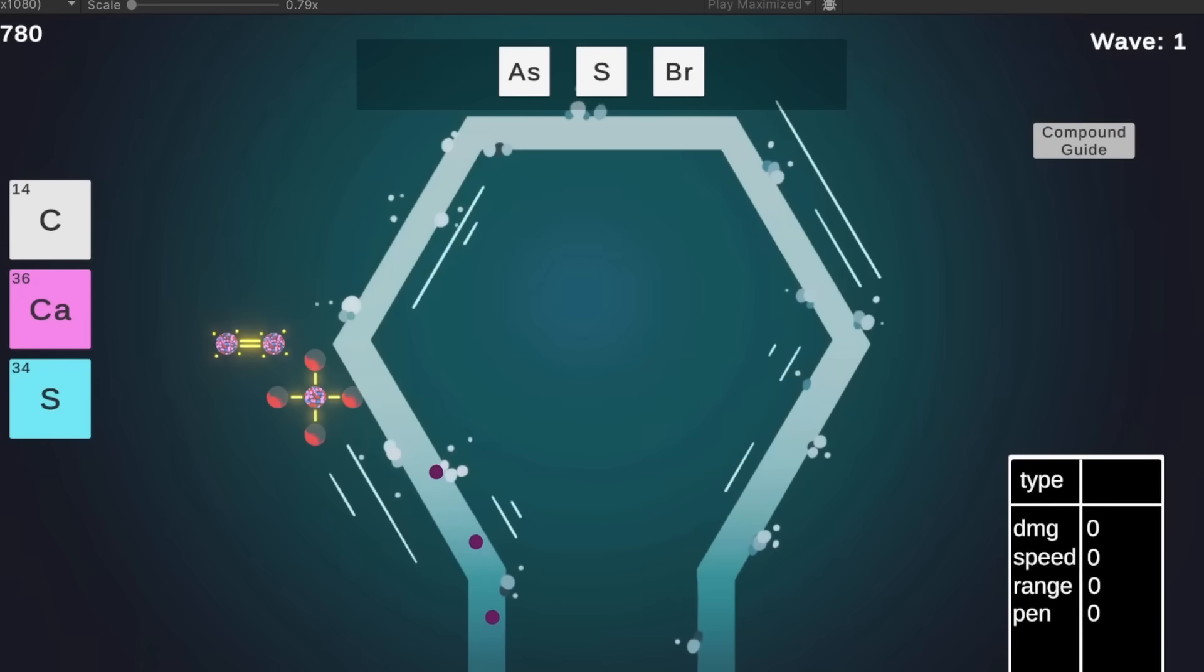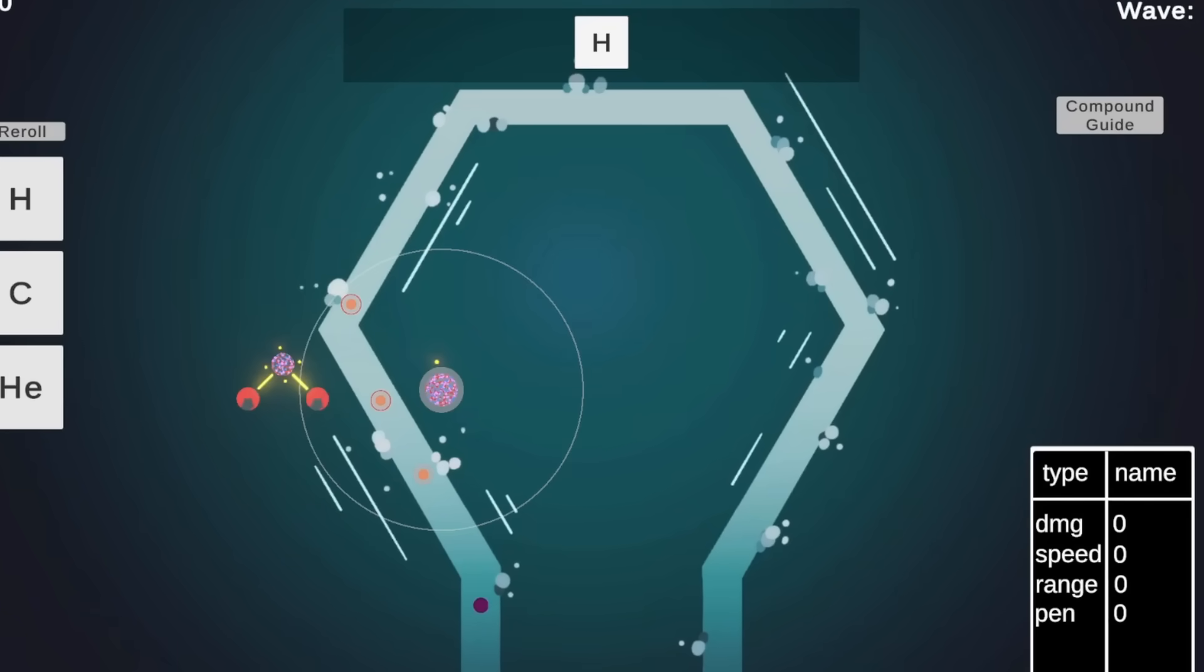There are some other conditional explosives in chemistry as well, such as alkali metals and water. Now, sodium places traps along the track, and if there is water present, they turn into explosive mines.